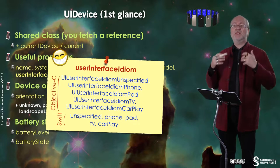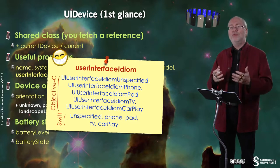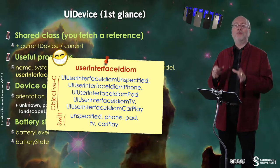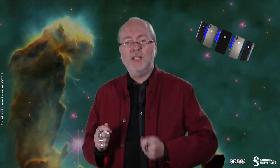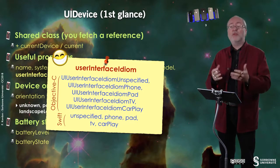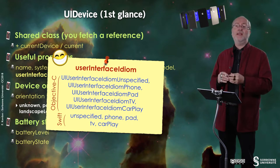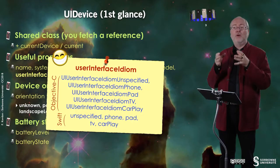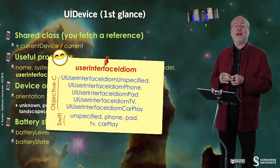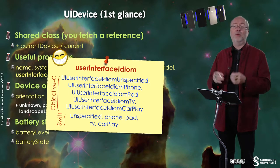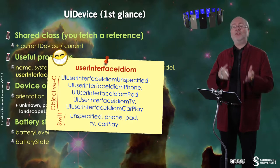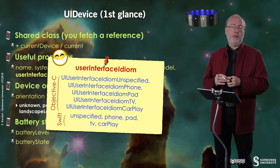CarPlay is the framework that allows you to display the content of your phone on an external screen and also use the controls associated with that external device, both of which are embedded in a car. So CarPlay is the mechanism that allows you to enjoy, in your car, all the applications on your phone — essentially navigation and music playing applications.